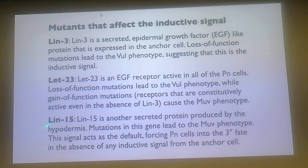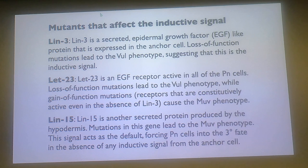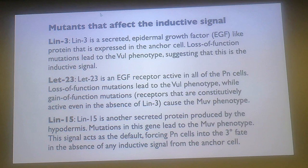And then there's another one, LIN-15. This is produced by the skin - the hypodermis. Mutations in this gene lead to the multivulva phenotype because this is the default signal. This is the signal that says, in the absence of any other information, make the tertiary phenotype - make skin cells. So you can have mutations here where they've lost that information, they don't have that default to go on and make skin, so instead they make whatever available fate is there - primary or secondary fate.